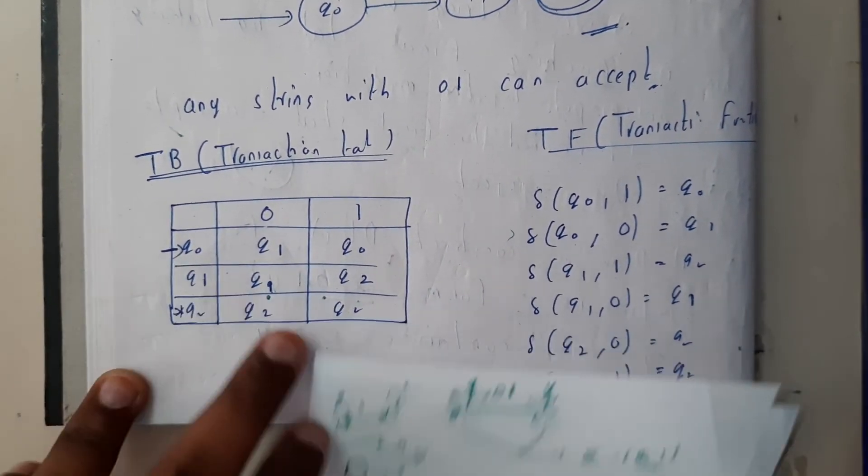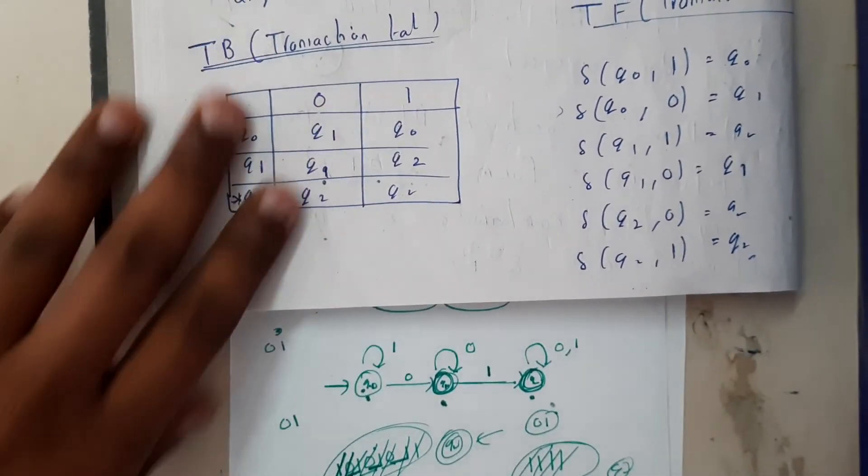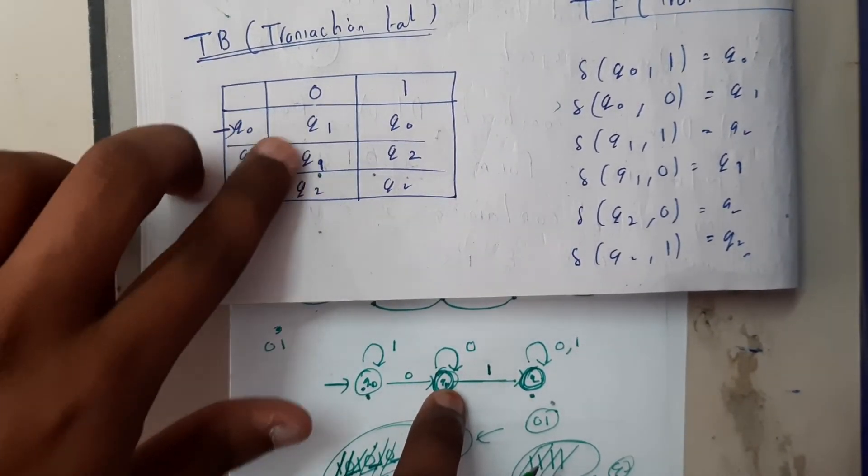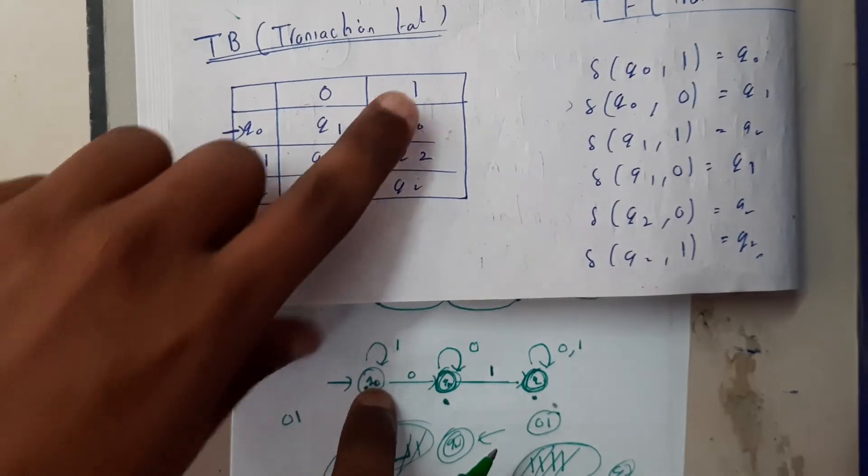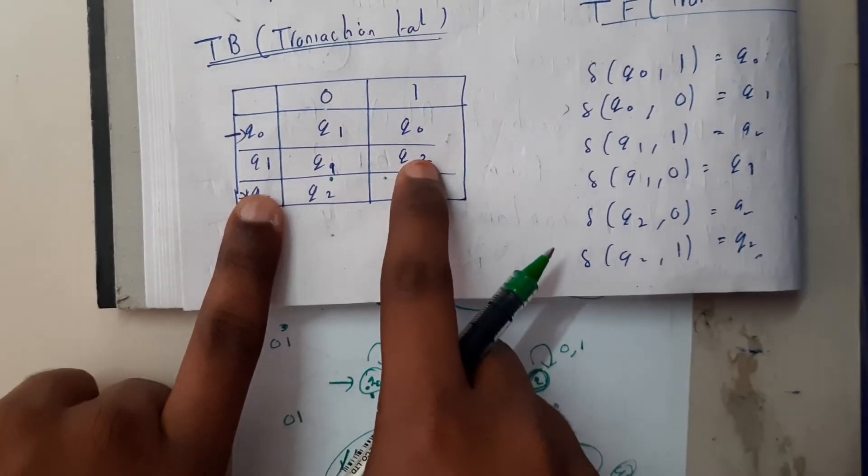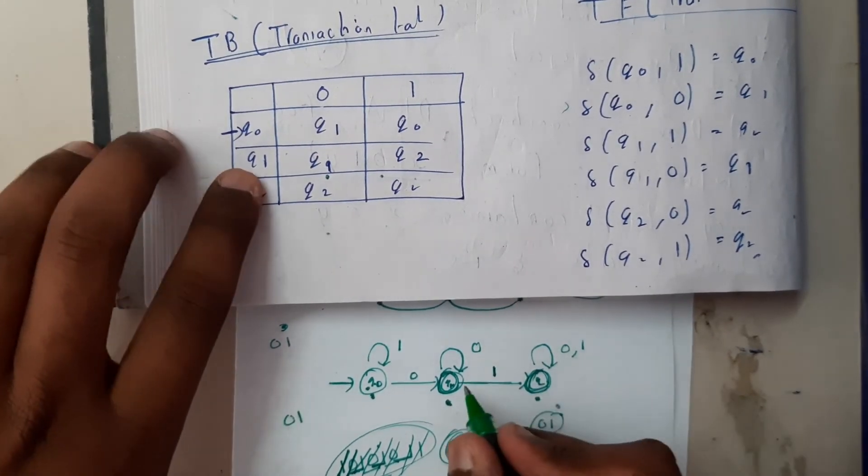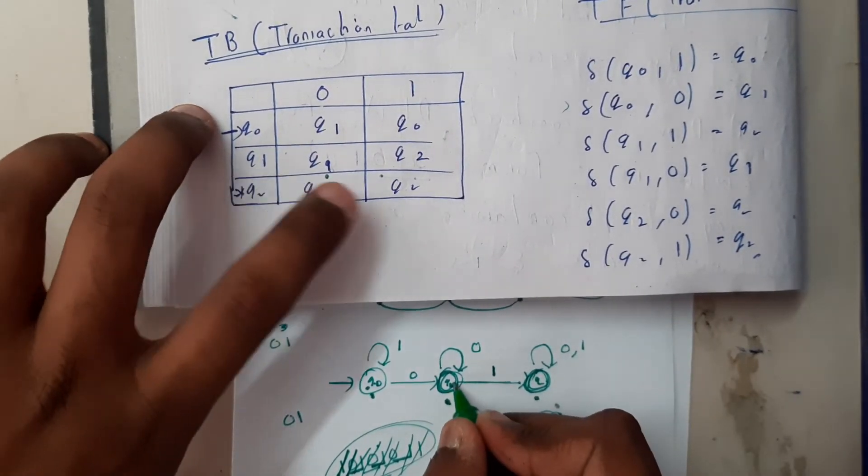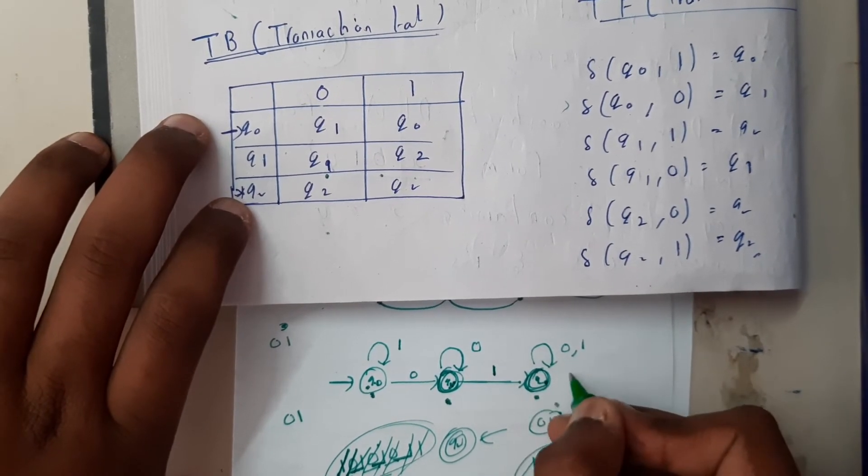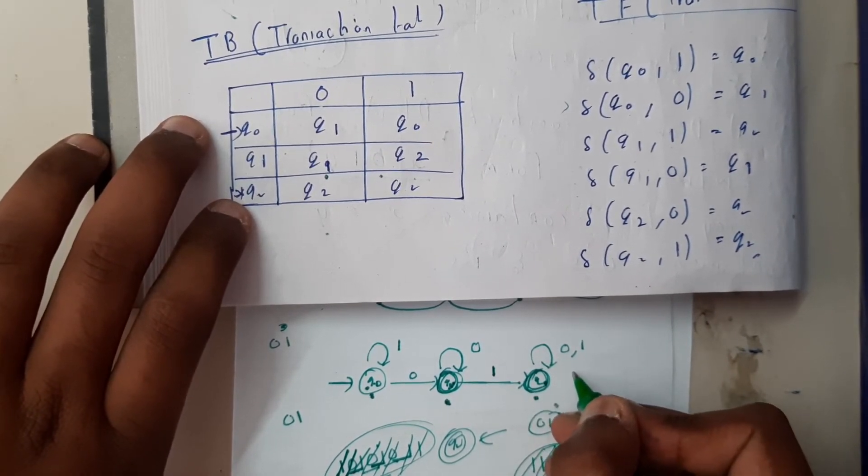Basically transition table: on q0, just observe the diagram. Let me keep it like this. On q0 on zero you went to q1, that's what I have written here. On q0 on one you stayed in q0, that's what we have written here. It is nothing but the representation of this in terms of table.